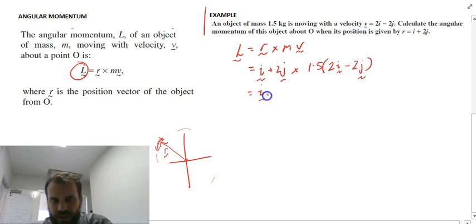So because we're just multiplying that second bit by a scalar, it's 1.5 times 2, which is 3, and minus 1.5 times 2, which is 3. So we're doing i plus 2j times 3i minus 3j.